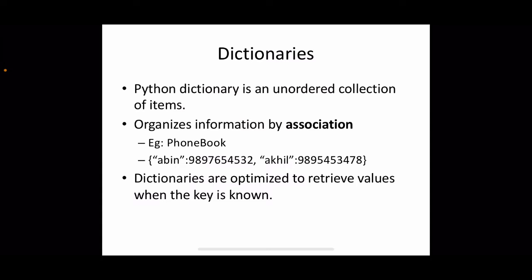Dictionary is an unordered collection of items. All previous data types like list, tuple, and string were ordered — ordered in the sense that if we specify a position of an item we can get the corresponding item using an index. Each individual element of the corresponding data type has a specific position. But in case of dictionary there is no such order; we don't know in which position a particular item is residing.